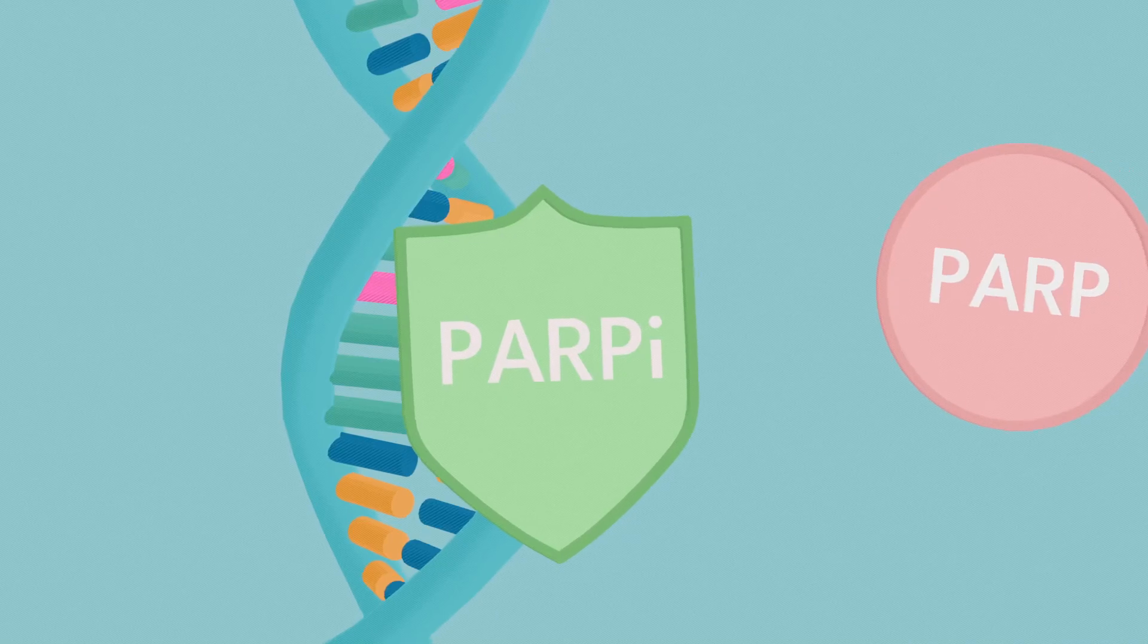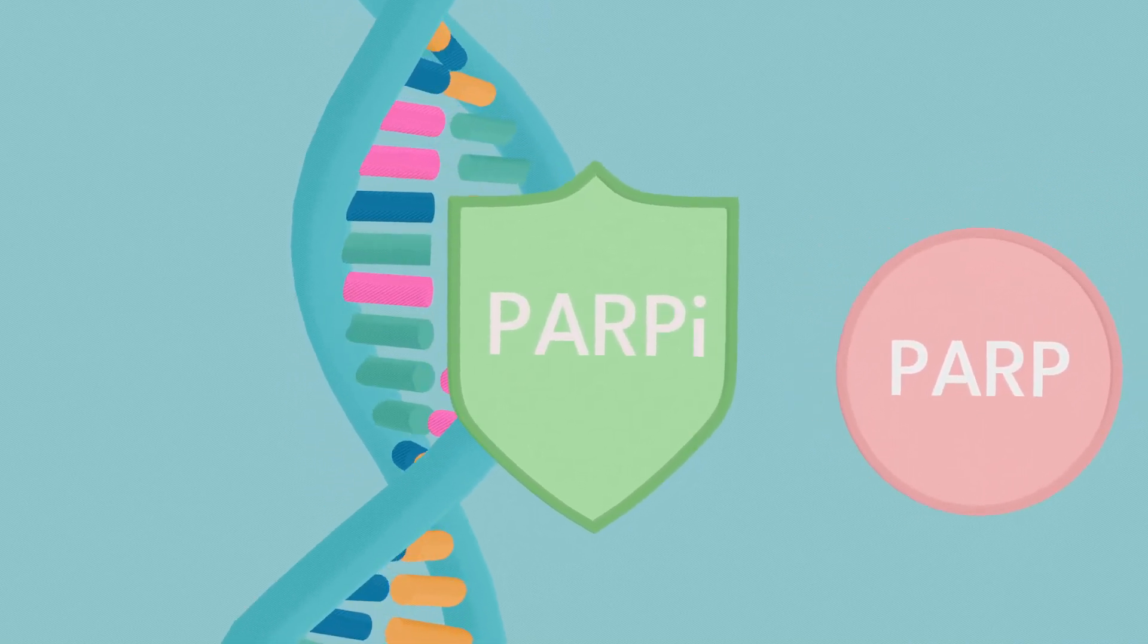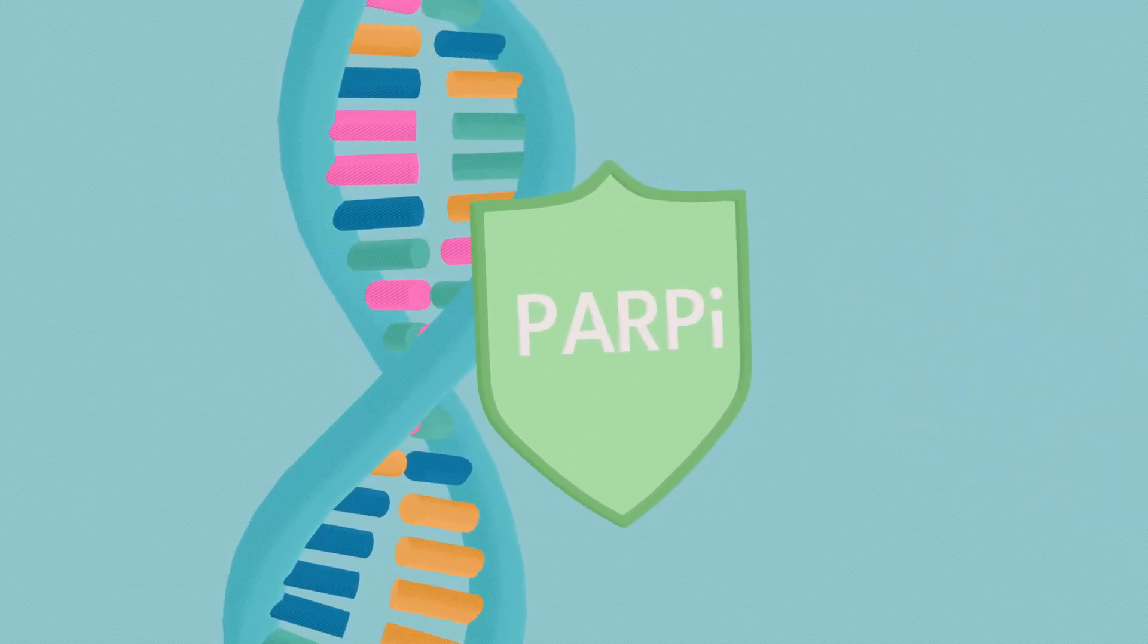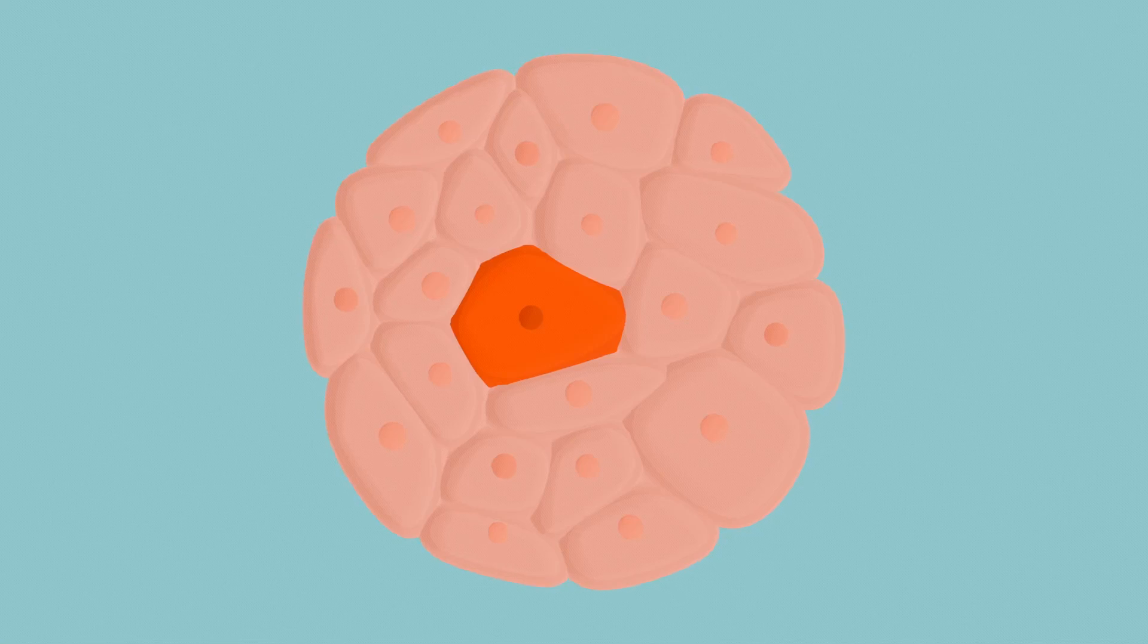Men with faulty HRR genes have been shown to respond well to a type of treatment called PARP inhibitors. PARP inhibitors prevent the disrupted DNA in cells from being repaired, causing the cancer cells to die.